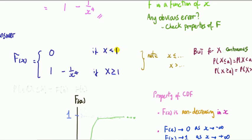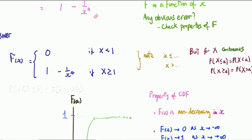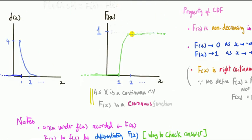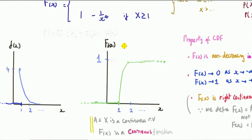For a continuous random variable, the probability that X is less than or equal to a equals the probability that X is strictly less than a, and similarly for the lower bound. As a check: plugging x equals one into one minus x to the minus four gives one minus one, which is zero — consistent with the upper piece. The two pieces connect correctly.